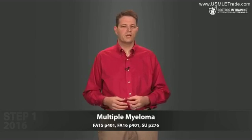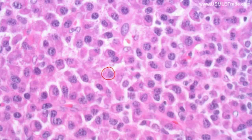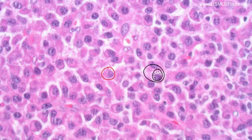Multiple myeloma is the most common tumor that arises within bone in people over about 50. It's a malignancy of plasma cells — a monoclonal plasma cell cancer. Plasma cells are fully differentiated B cells whose job is to produce antibodies, so multiple myeloma produces huge amounts of antibodies, usually IgG, sometimes IgA. You can identify plasma cells by the clumps of chromatin in the nuclei that give a clock face appearance, and the cleared cytoplasm just outside the nucleus called the perinuclear Hoff.